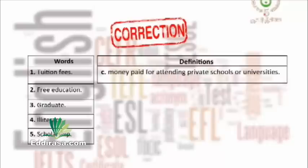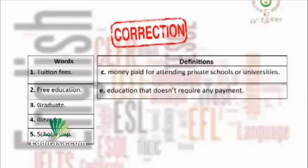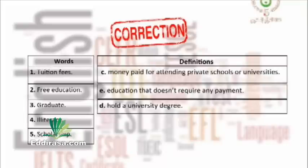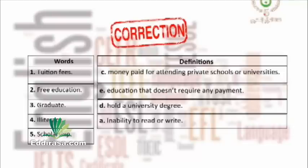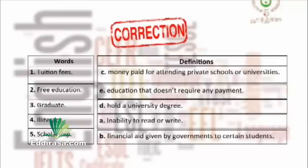Tuition fees means money paid for attending private schools or universities. Free education means education that doesn't require any payment. To graduate means to hold a university degree. Illiteracy means inability to read and write. And scholarship means financial aid given by governments to certain students. That was our vocabulary exercise today.